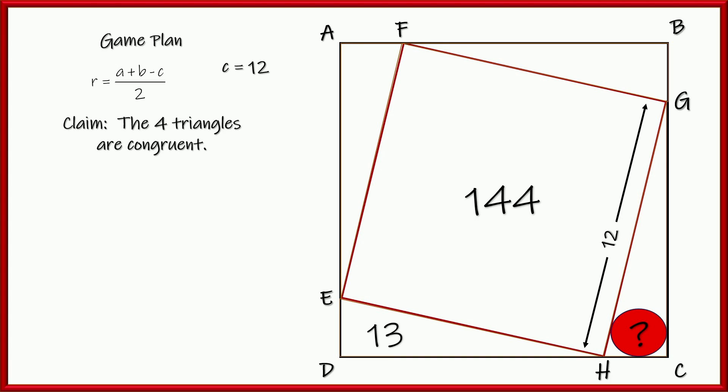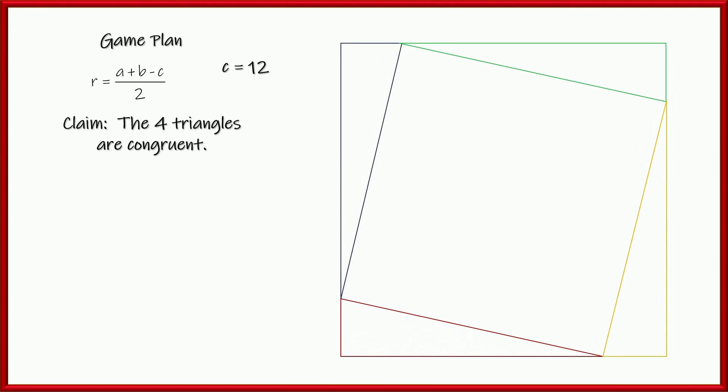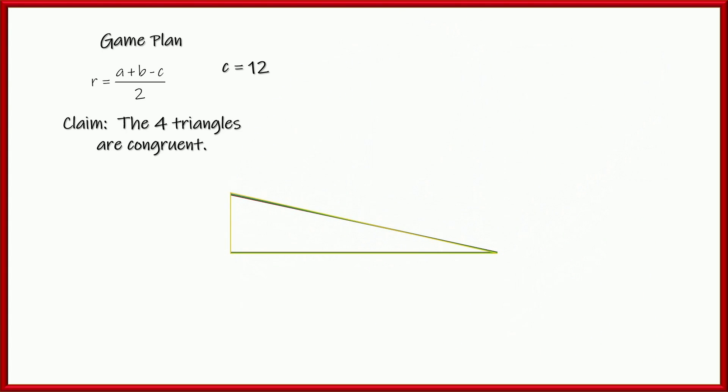Now, here's a claim. I'll support it here in just a second, but I'm going to claim that all four of these triangles on the outside are congruent. These four right here, do you see them? Now, visually, we can tell they are. I can put them on top of each other without changing their size.